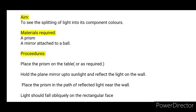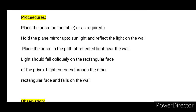Aim: To see the splitting of light into its component colors. Materials required: a prism and a mirror. Procedure: Place the prism on the table. Hold the plane mirror up to sunlight and reflect the light on the wall. Place the prism in the path of the reflected light near the wall. Light should fall obliquely on the rectangular face of the prism.